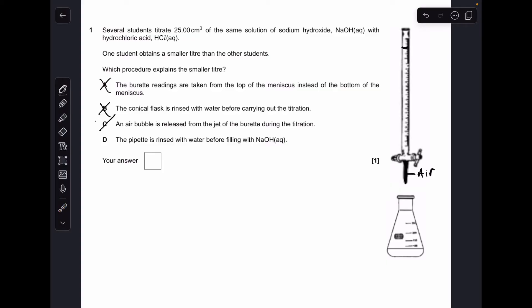So that one's wrong, so that means D must be the right answer. Let's just quickly explain why. Sorry, I don't have a picture of a pipette, but I'm sure you can visualize this one. So if you rinse your pipette with water before you put the sodium hydroxide in, there'll be a tiny amount of water left in the pipette that'll take up some space, so there'll be less sodium hydroxide actually going into the pipette, which means less sodium hydroxide is going to be in this conical flask, which means you're not going to need as much acid from the burette to neutralize it.